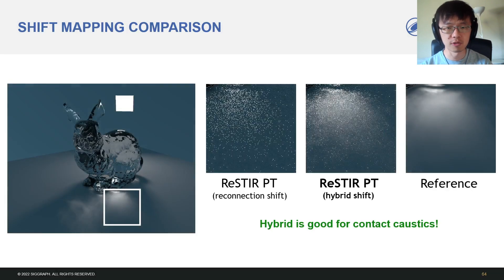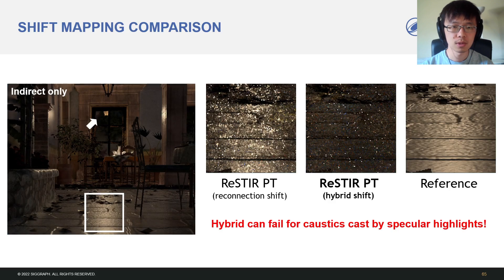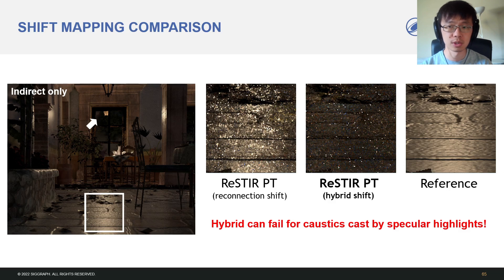Using the default hybrid shift, our method can also handle common types of caustics, like light passing through glass and concentrating on the supporting floor. But there are cases where the hybrid shift works poorly — for example, caustics cast by a small distant highlight. This is because a vertex on the window acting like a virtual light source is considered too smooth for reconnecting. Handling this case better is interesting future work.